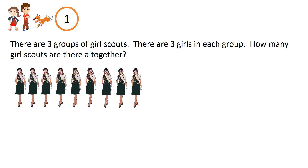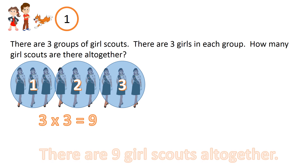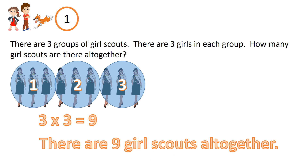Question 1. There are three groups of Girl Scouts. There are three girls in each group. How many Girl Scouts are there all together? Three groups of three. Three times three equals nine. There are nine Girl Scouts all together.